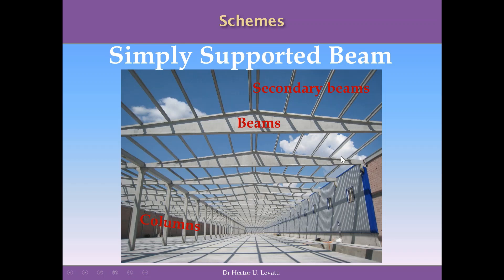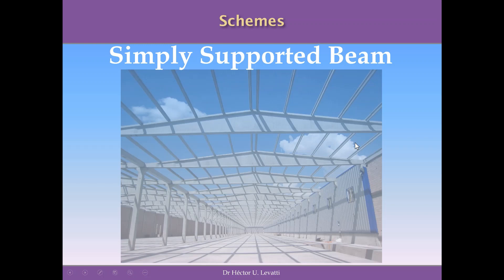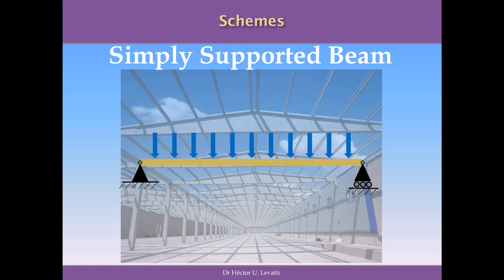If we want to analyze the delta beam, we can use the simply supported beam scheme introduced earlier. We replace the delta beam in reality with a schematic rectangle, apply a pin support on the left and a roller on the right, and model the discharge of the secondary beams onto the delta beam with applied loads. We can then run analysis to determine reactions, bending moments, shear forces, internal stresses in the cross-section, and more.